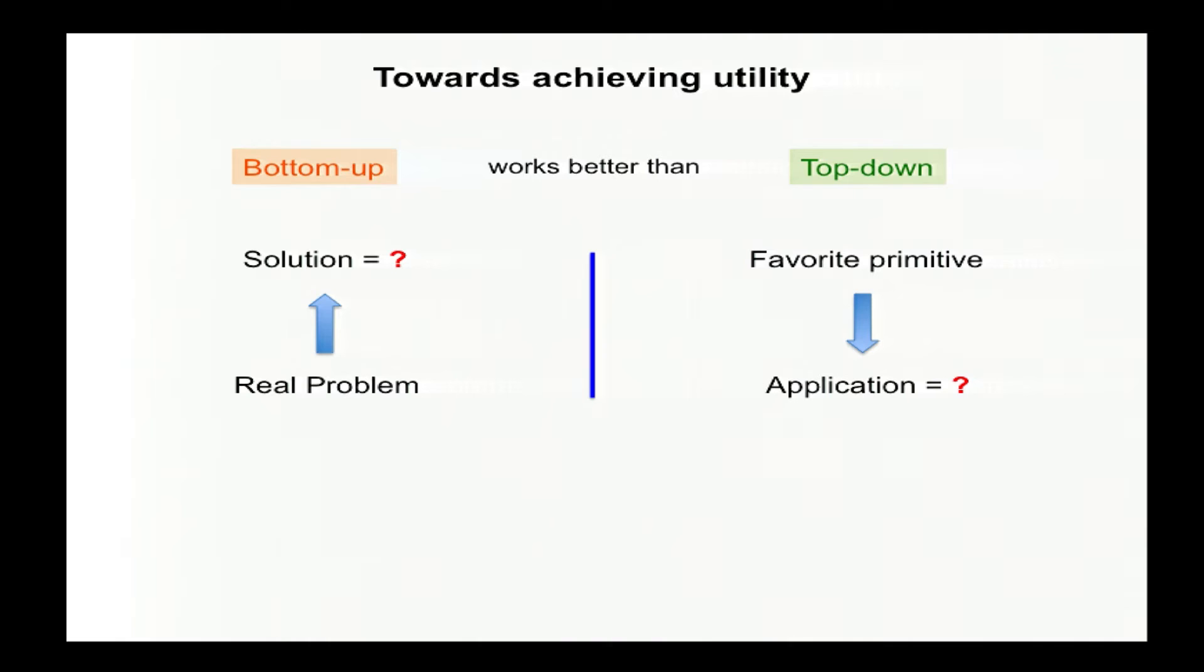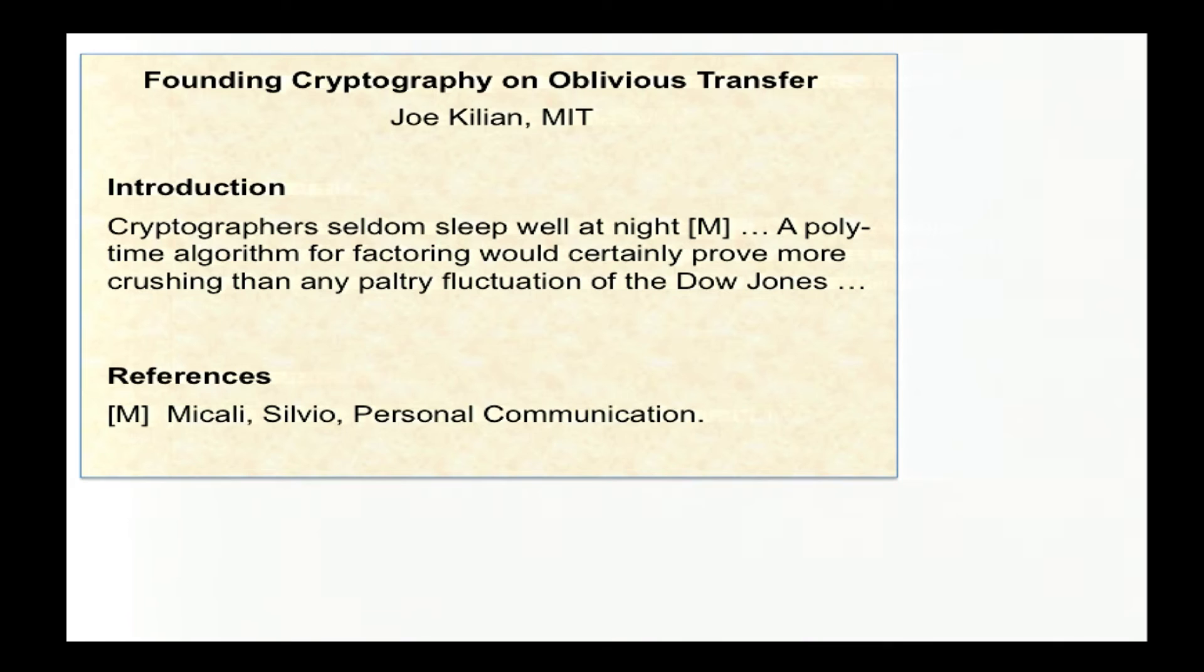One thing I would observe is that if one does want to achieve utility, it's best done by starting with the real problem and finding a solution or bottom-up approach. Whereas in theory, the approach is often the opposite. Namely, to start from a primitive and then try to dream up applications. And this doesn't work so well. The reason is that the real problem, if there even was one, may not require all features of the primitive. So to be able to call the primitive an application, one has to tweak or coerce the application so that the features become needed. But then this results in something artificial and not necessarily of utility.